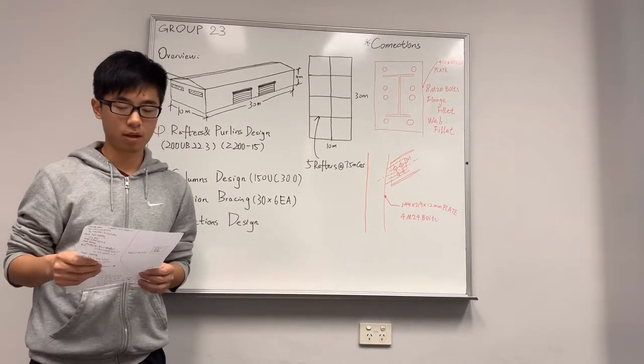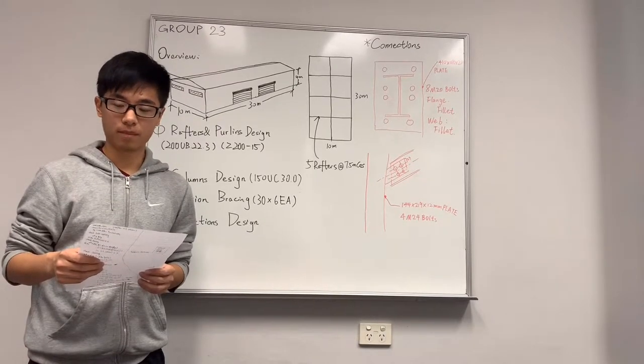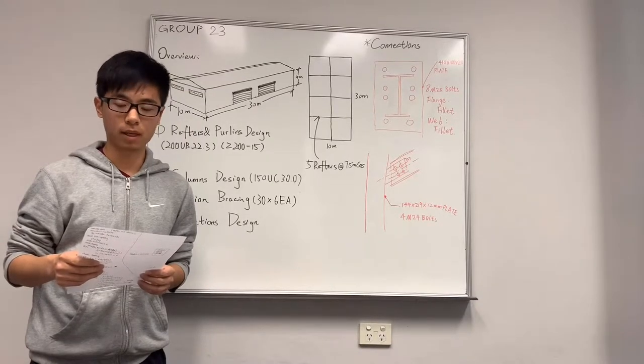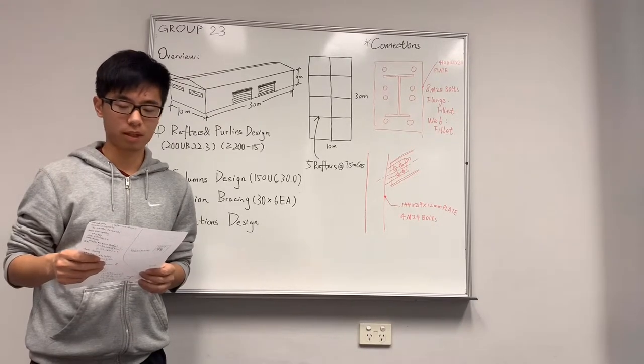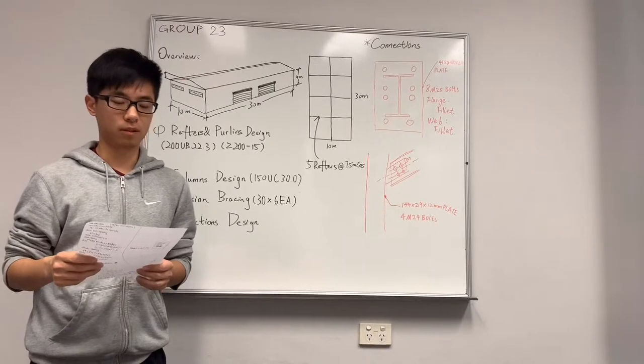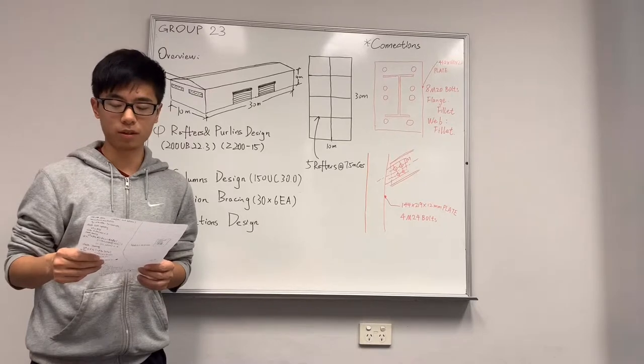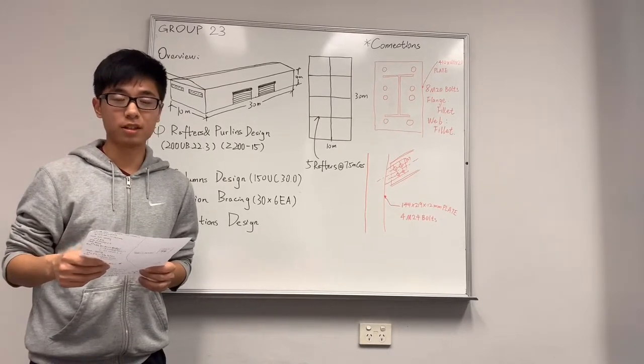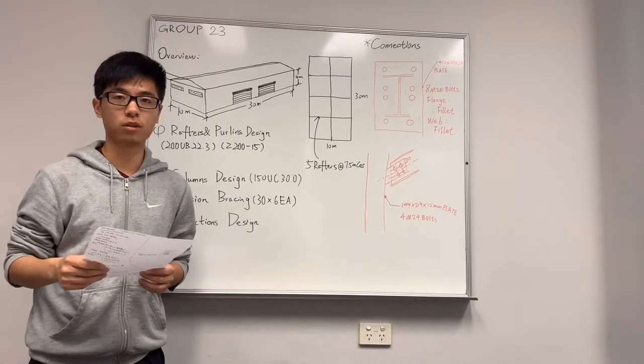For rafter selection, as it is a relatively long rafter, the span is 10 meters and 5 rafters are used in total. So we think the most economical way is to reduce rafter size. We choose 200 UB 22.3 with 2 fly bracing. The section is strong enough to carry the load. Then we reduce the rafter size to 200 UB 18.2 still with 2 fly bracing. But the section turns out to be inadequate. So we choose 200 UB 22.3 with 2 fly bracing.